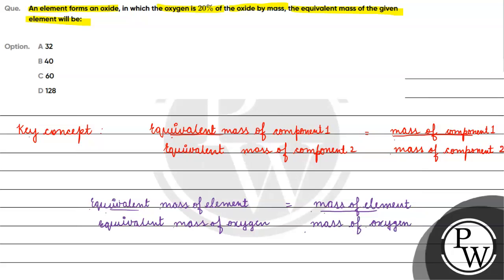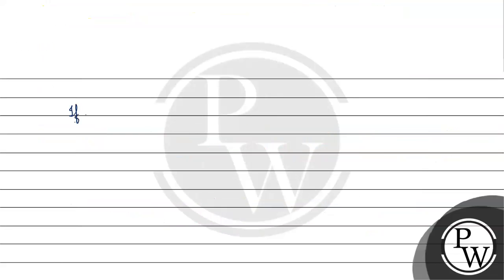What we need to use from this question is that oxygen is 20% of the oxide by mass. So if the mass of the oxide is x grams, then 20% of the mass is oxygen. So mass of oxygen equals 20% of x, which is x/5.